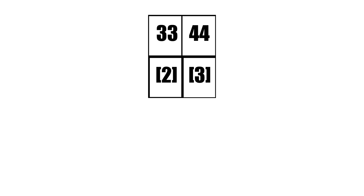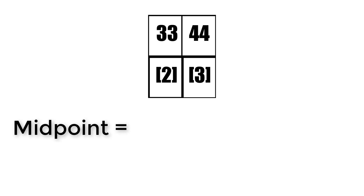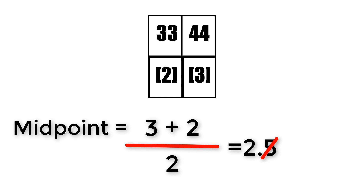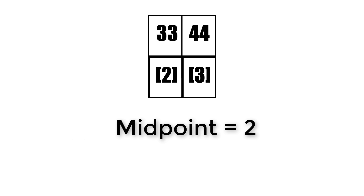Now we have a new interval with just two values: the index of 2 and the index of 3. We have to calculate the midpoint again, which shall be equal to 3 plus 2 over 2. So we get 5 divided by 2, which is 2.5, but since this is integer division we cut off the decimal point and we're left with 2. So the midpoint is the index of 2. 33 is equal to 33 — so we have a match!